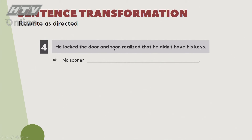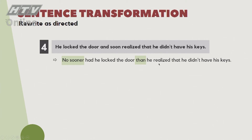Câu số 4: 'He locked the door and soon realized that he didn't have his keys.' Hành động khóa cửa xảy ra trước, rồi sau đó mới nhận ra là quên mang chìa khóa. 'No sooner' đi với 'than'. 'Locked the door' xảy ra trước, 'realized' sau. Đáp án: 'No sooner had he locked the door than he realized that he didn't have his keys.'